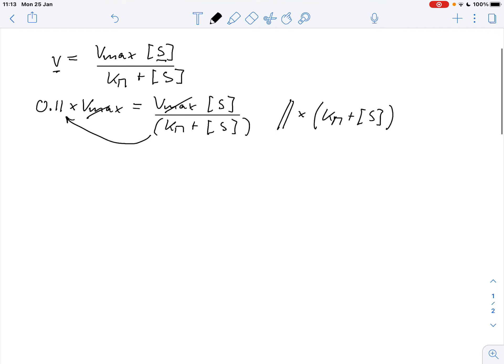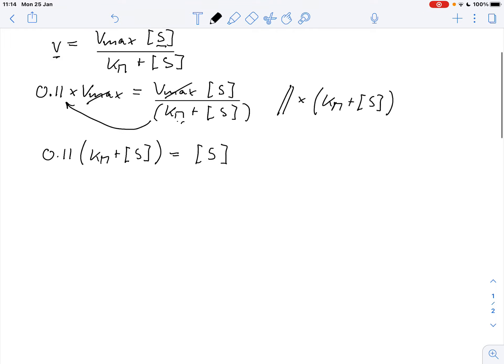And we get 0.11 times Km plus the substrate concentration equals, well this cancels out, Km plus substrate concentration if we multiply it. So all we have left is the substrate concentration on the right-hand side. Now we expand this and multiply this into the bracket. So we get 0.11 times Km plus 0.11 times the substrate concentration equals 1 times the substrate concentration.